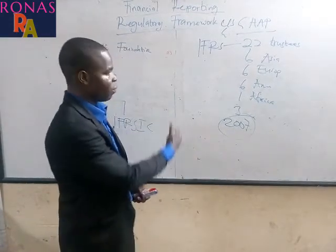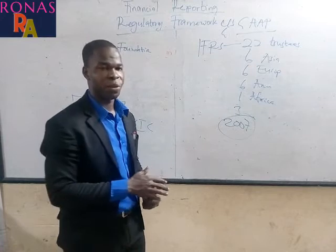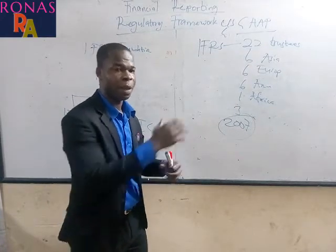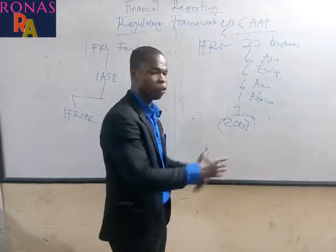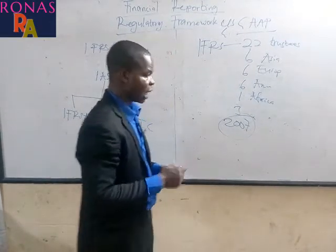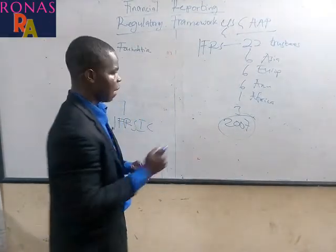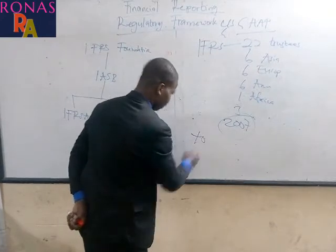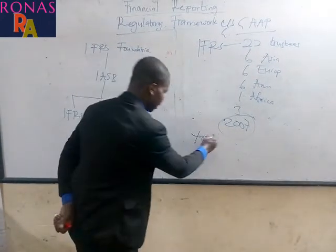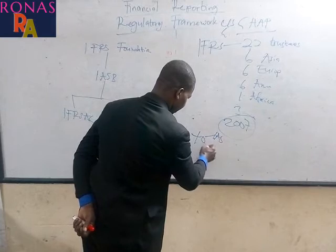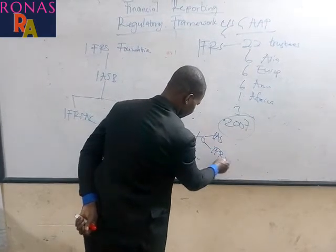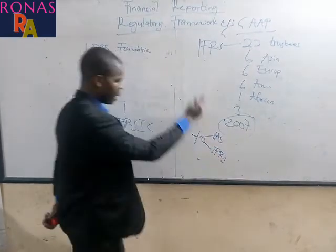Let's look at the process that they go through to issue a new standard — this is very important and very examinable. Currently, we have about 40 accounting standards in total, both IAS and IFRS. Some of these are being revised, with the IAS standards being revised into IFRS. For instance, revenue was IAS 15 and has now been revised into IFRS 15 — Revenue from Contracts with Customers.